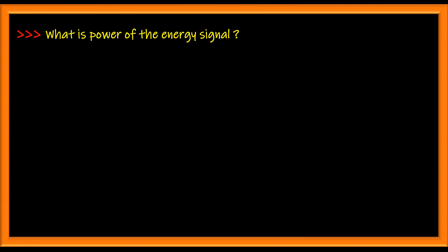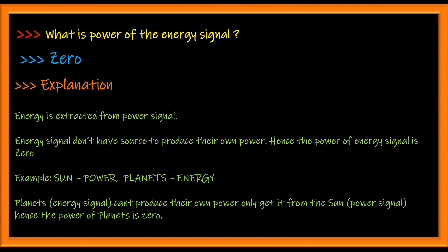What is the power of an energy signal? Zero. Energy signals don't have a power source and cannot produce power on their own. They are always dependent on an external power source which supplies energy to the energy signal. Hence the power of an energy signal is zero.